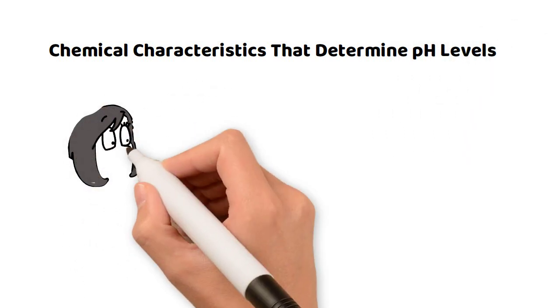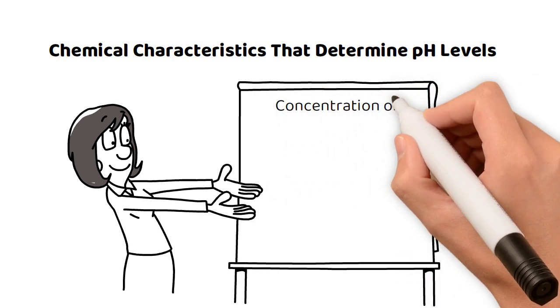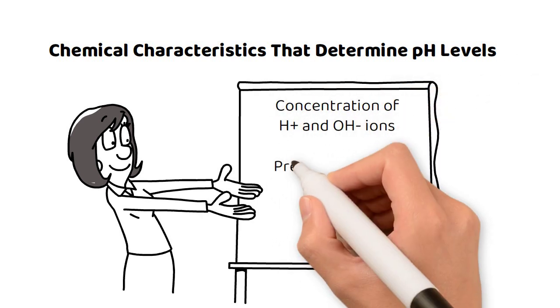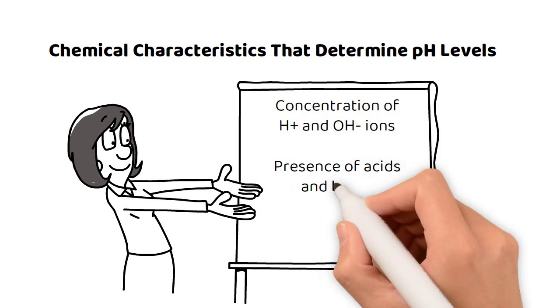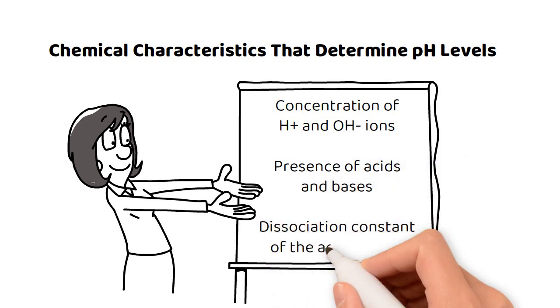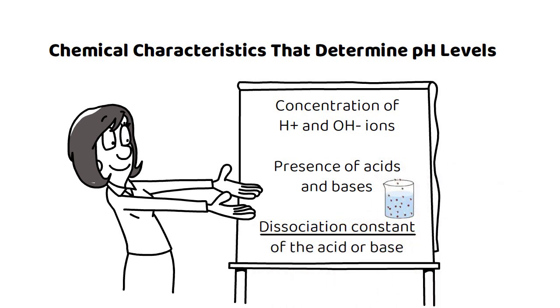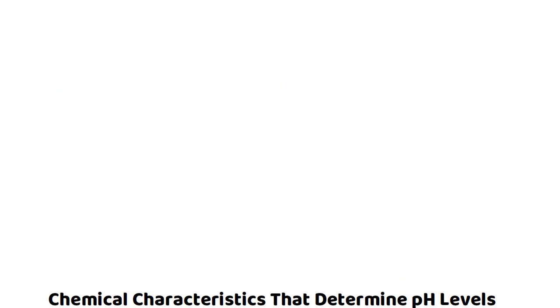Chemical characteristics that determine pH levels. The pH of a solution is influenced by several factors, including the concentration of H+ and OH- ions, the presence of acids and bases, and the dissociation constant of the acid or base. The dissociation constant represents the degree to which an acid or base dissociates in solution.